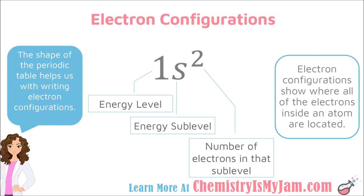The electron configuration always has a large number indicating the energy level, followed by a letter — S, P, D, or F — indicating the sublevel, and then a superscript on that letter indicating the number of electrons in that sublevel. The example in front of you shows an electron located in the first energy level in the S sublevel, and that sublevel is holding two electrons.